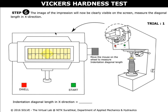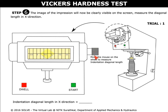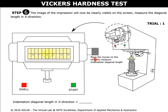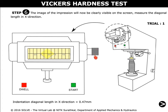Once the image of the impression is clearly visible, move the pointer here to measure the indentation diagonal length in the x-direction. The indentation diagonal length in the x-direction is now found.